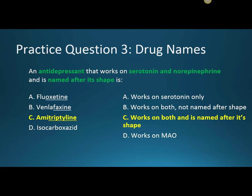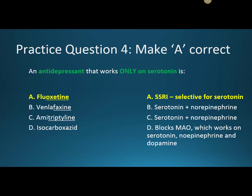The next couple of questions will change the question to make each of the answers correct. An antidepressant that works only on serotonin — the correct answer is A, fluoxetine. That one is selective for serotonin as the name implies. B and C are incorrect because they work on serotonin and norepinephrine both. Isocarboxazid works differently, blocking the monoamine oxidase enzyme, which causes it to work on serotonin, norepinephrine, and dopamine.